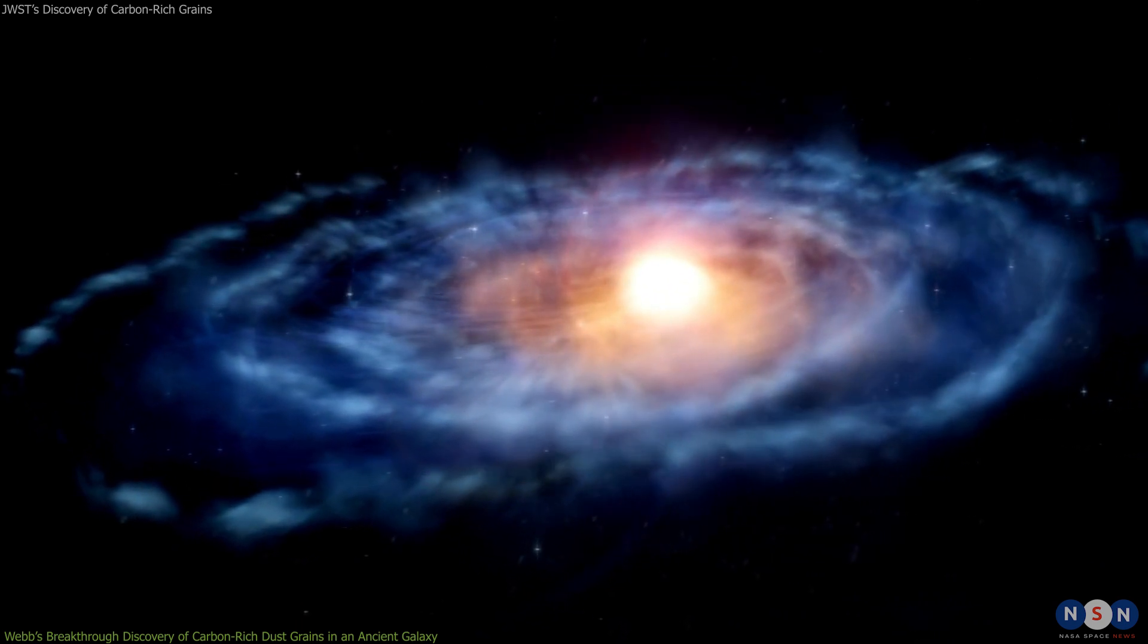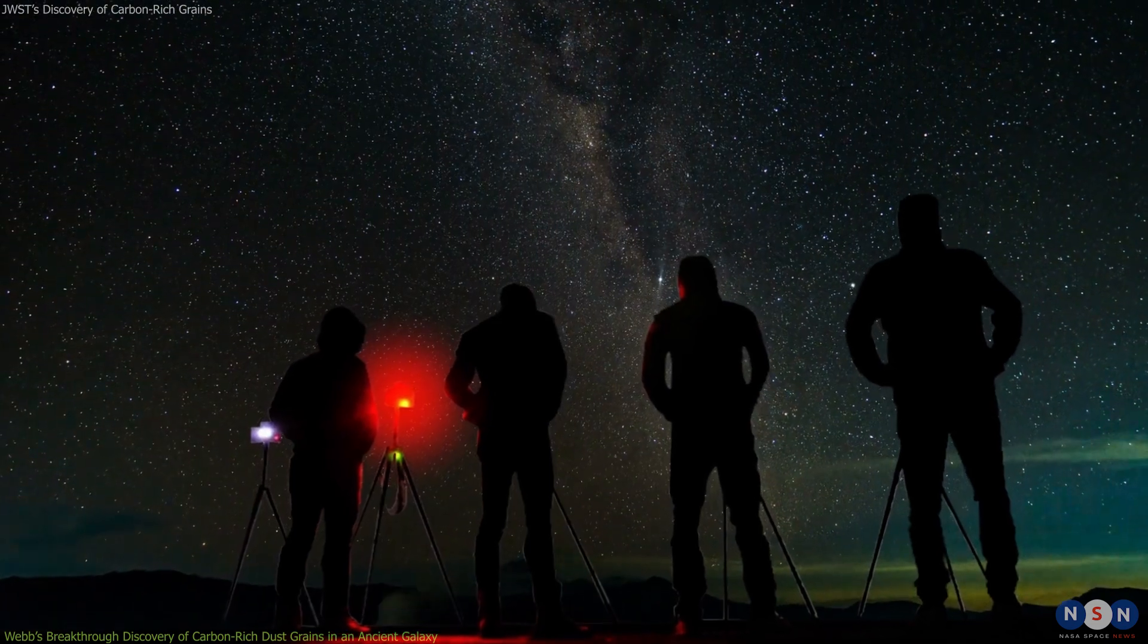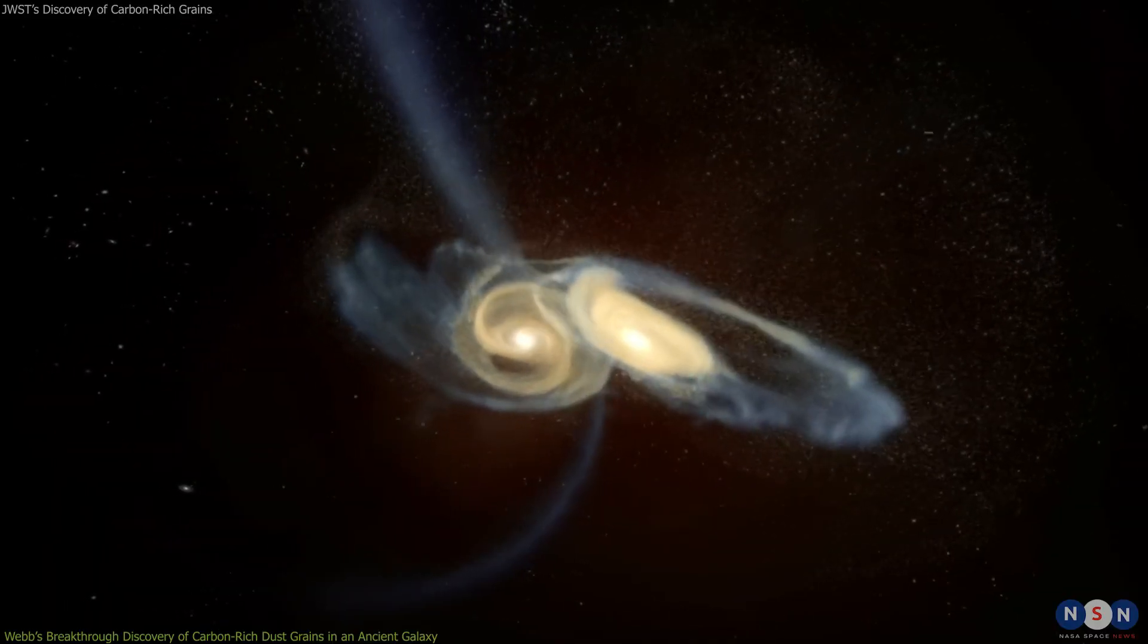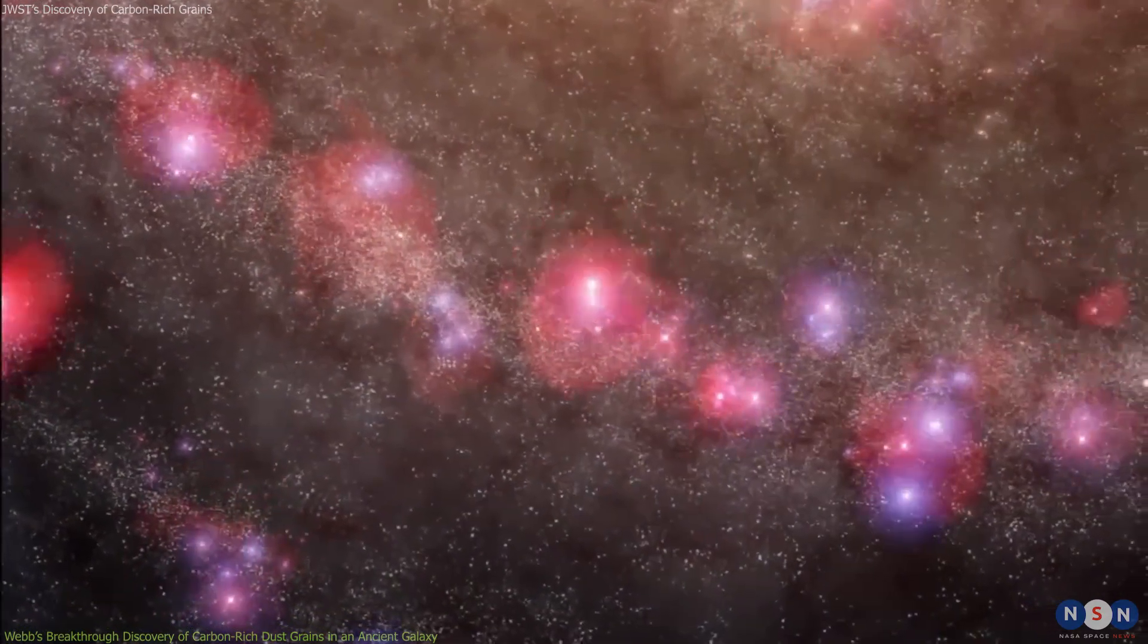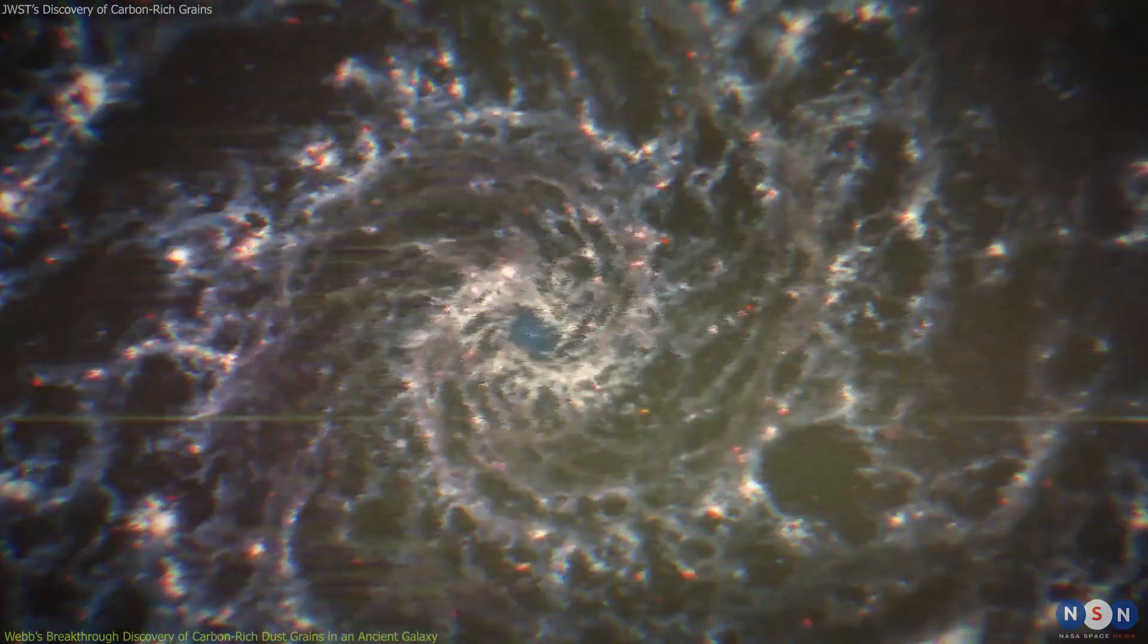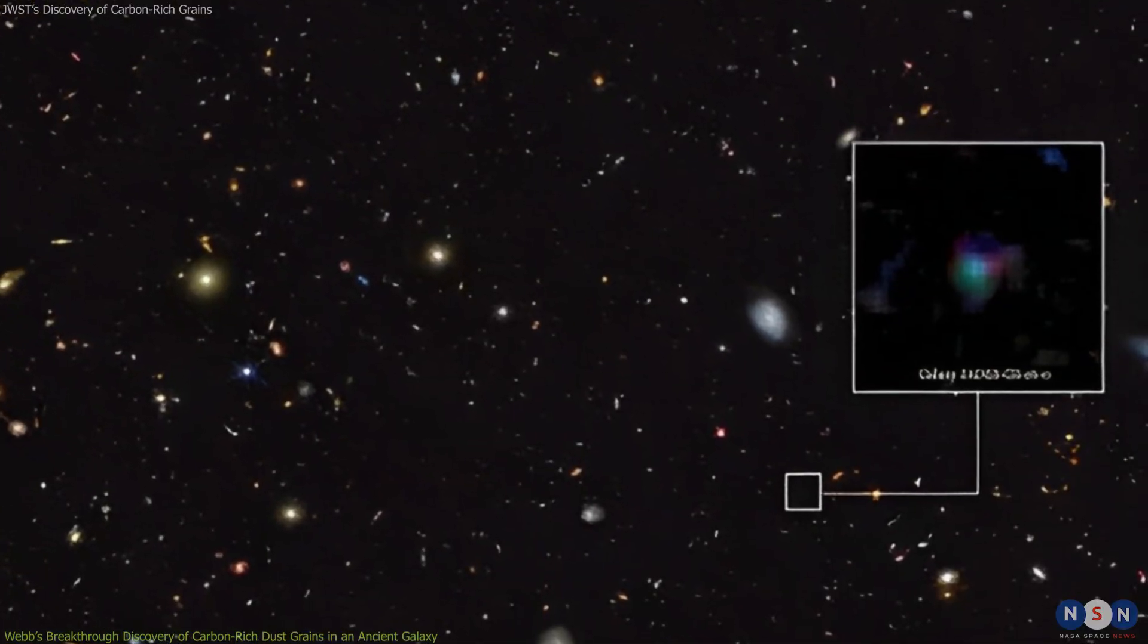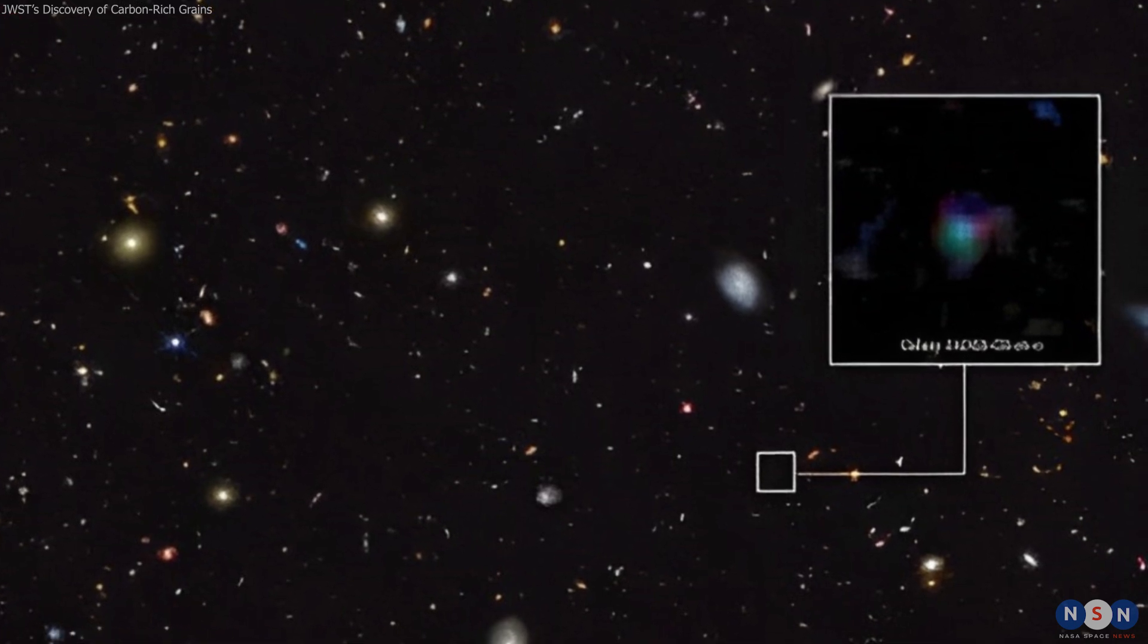So how did this galaxy end up with so much carbon-rich dust in such a short time, and how did it manage to keep its PAHs intact? These are the questions that baffled the astronomers who made this discovery. They proposed several possible scenarios, such as a merger of two galaxies, a burst of star formation triggered by gas inflows, or a different mechanism of dust formation that does not rely on stars. However, none of these scenarios can fully explain the observations, and more data is needed to test them.